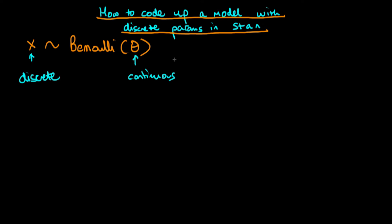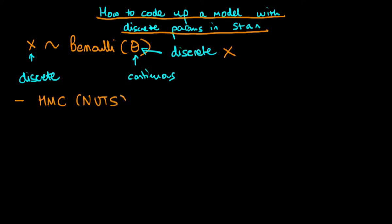The problem comes when we specify a model where the parameter is discrete. This is where we run into problems in Stan and we can't just code up a model like that naively. However, fortunately, because of the fact that HMC — which is essentially the algorithm that powers Stan, really it's the no-U-turn sampling algorithm, but essentially that's HMC — these algorithms run on the log probability. So as long as we can find a way to increment the log probability of our model, which is essentially what each of the sampling statements do in Stan, then we can code up such a model. Typically what this means is that we marginalize out our discrete parameter from the log probability and then increment the log probability by that particular marginal density.